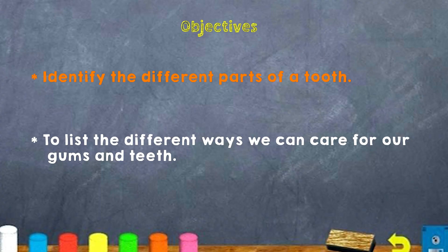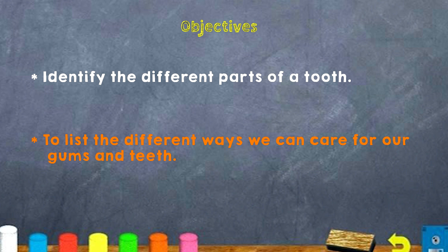Hello boys and girls and welcome to another lesson of science and daily life in the grade nine classroom. I am Miss Riemann and I'm here to take you on a fun and exciting journey as we learn more about the teeth. Last session we talked about the difference between baby teeth and permanent teeth, and we differentiated between the types of teeth. Today we're going to identify the different parts of a tooth and list the different ways in which we can care for our teeth and gums.